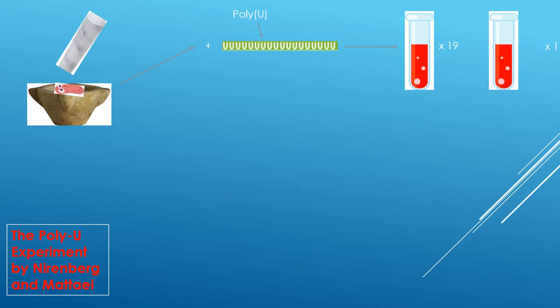They then filled 20 test tubes, each with different amino acids, with one radioactively tagged by carbon 14 in order to detect the amino acid after the experiment was complete. In each round, a different amino acid was tagged in order to test each one.